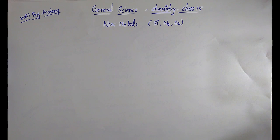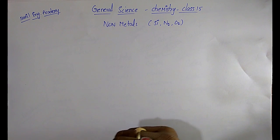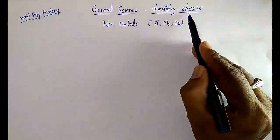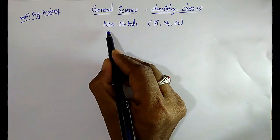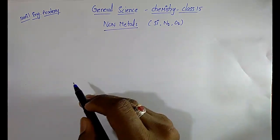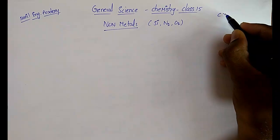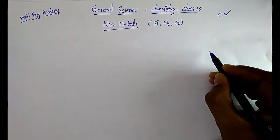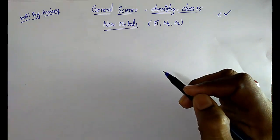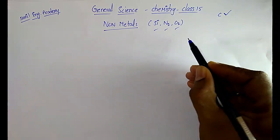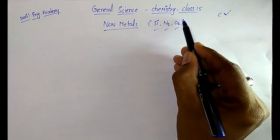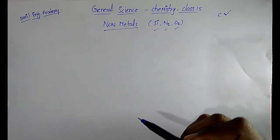Hi friends, welcome to Sunil Engineering Academy. I am Sunil. In chemistry we have already completed 14 classes. This is class 15. In non-metals, the very important non-metal carbon is completed. Now the remaining important non-metals silicon, nitrogen, and oxygen — I will discuss these non-metals in this class.